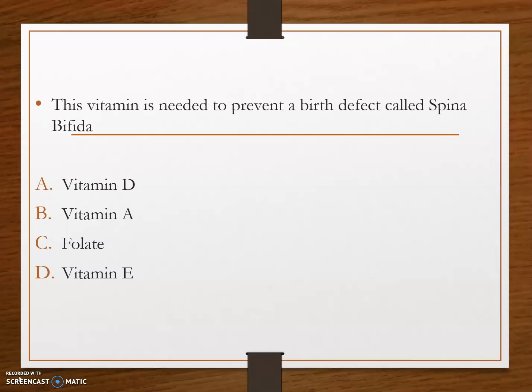Next question: which vitamin is needed to prevent a birth defect called spina bifida? Options are: option A, vitamin D; option B, vitamin A; option C, folate; and option D, vitamin E. The answer is option C, folate. Folate is vitamin B9, and this vitamin is needed to prevent the birth defect called spina bifida.